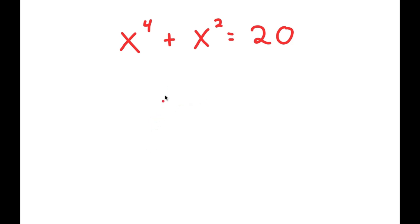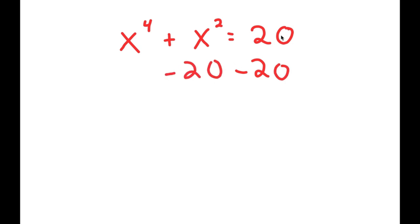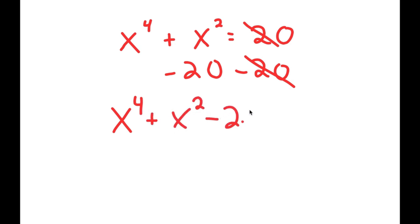In this equation, I have x to the power of 4 plus x squared is equal to 20. To solve this, I'm going to start by subtracting 20 on both sides so we can have all our terms on one side. So I get x to the power of 4 plus x squared minus 20 is equal to 0.